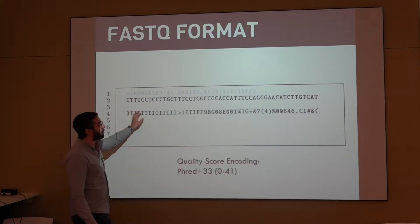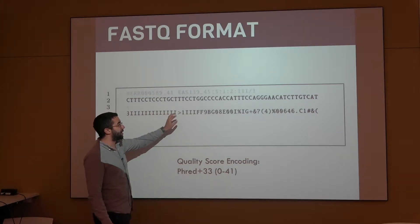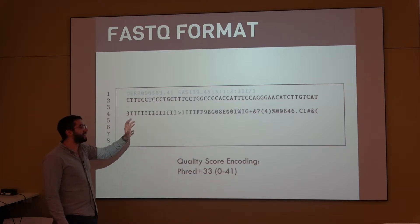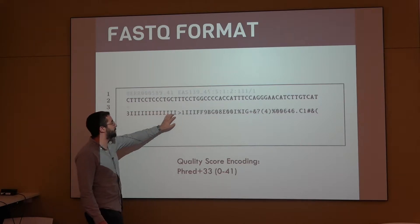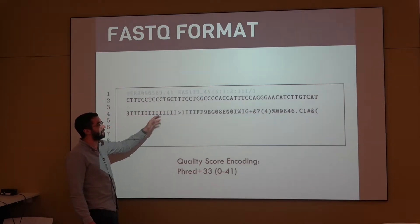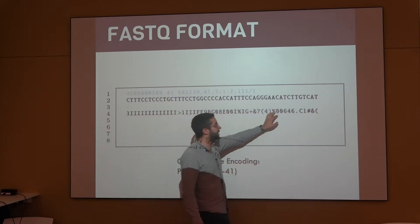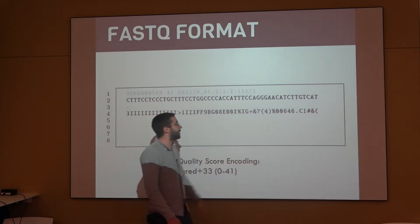Then, the fourth line is going to be the quality of that sequence. So, quality is usually encoded as PHRED plus 33, which goes from 0 to 41. The highest quality bases are going to be at the beginning, which you see here. I is like the second highest quality, and then the quality starts decreasing at the end with different characters.